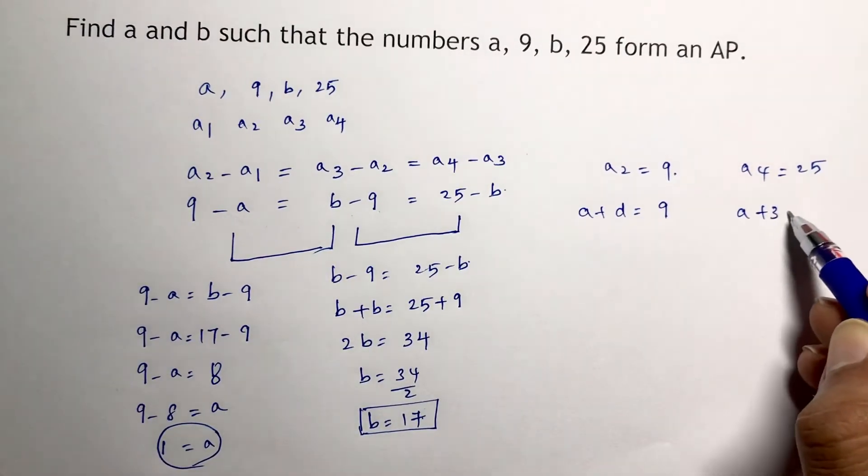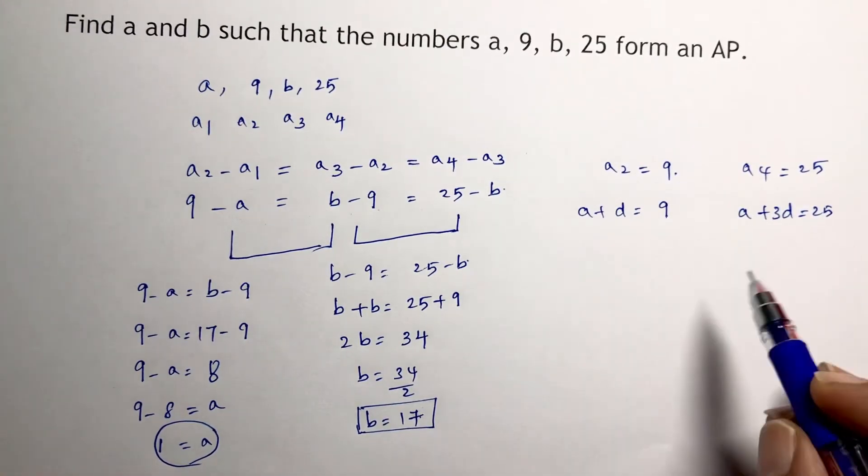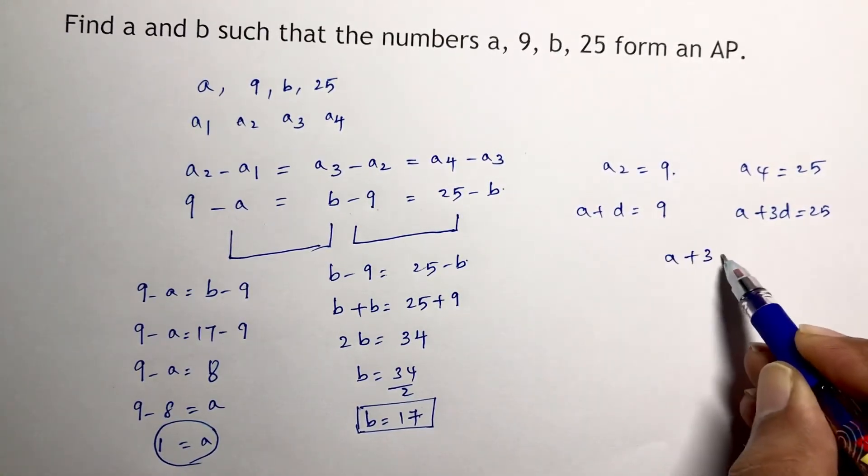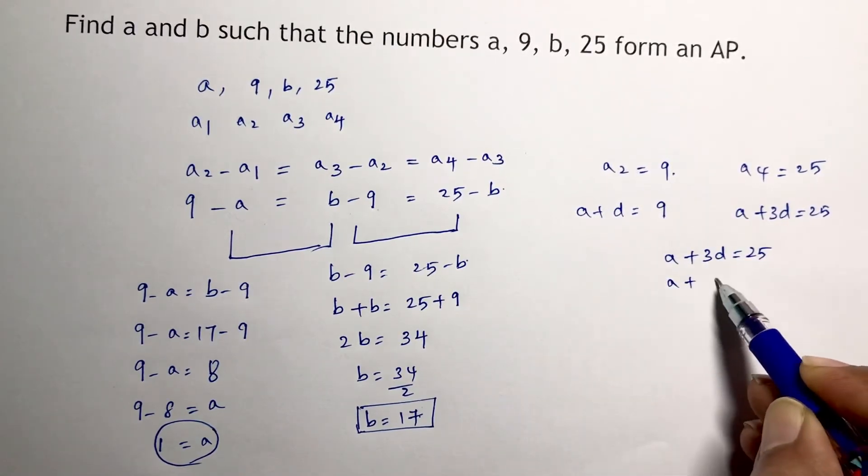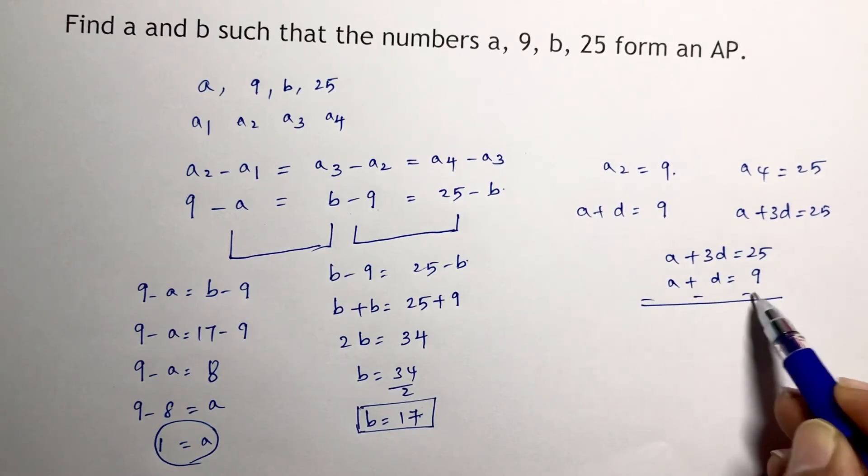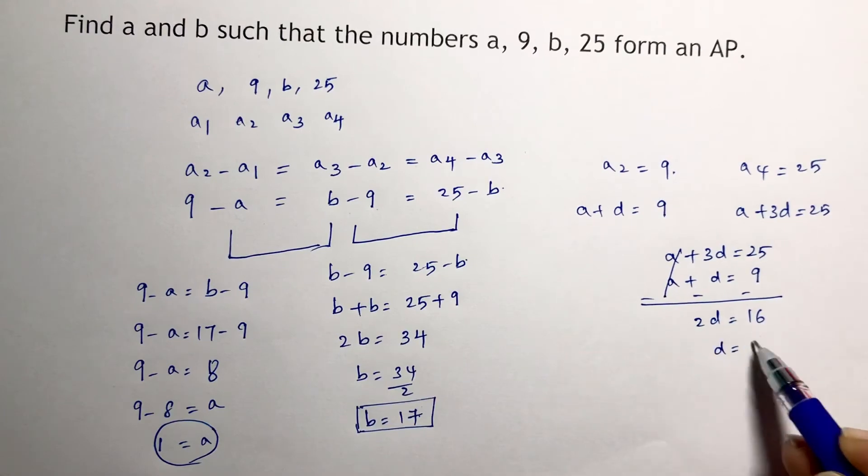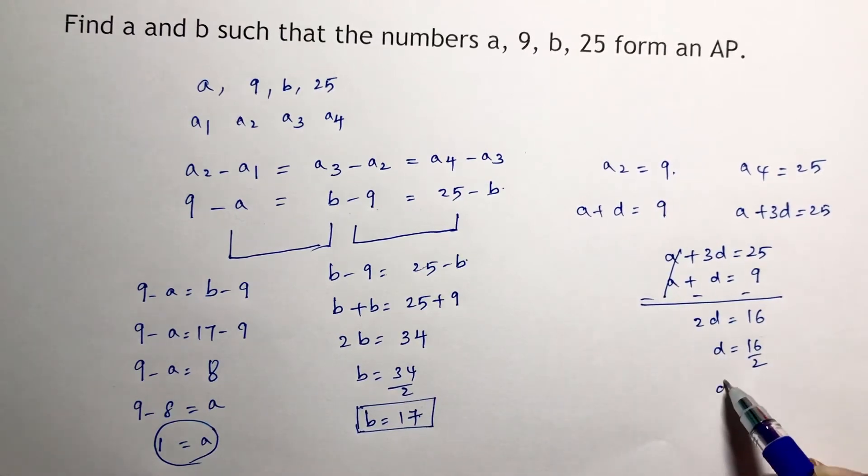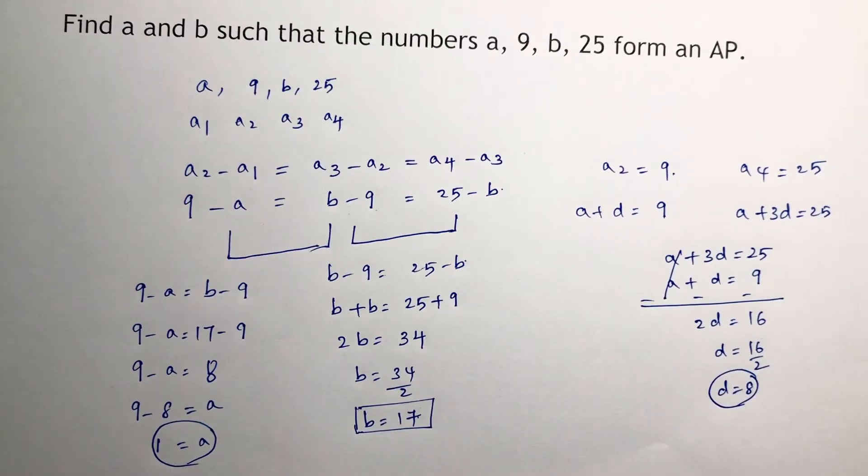If you eliminate here, a plus 3d is 25, a plus d is 9. So 2d is 16, therefore d is 16 by 2, which gives d equals 8.